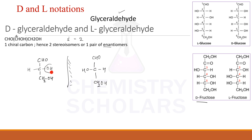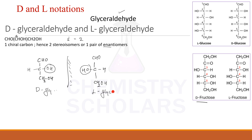When OH is on the right hand side, we call this capital D. And when OH is on the left hand side, we call it capital L. So this becomes D-glyceraldehyde and this becomes L-glyceraldehyde.